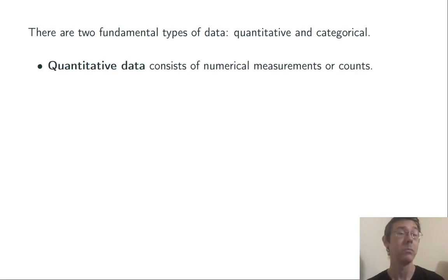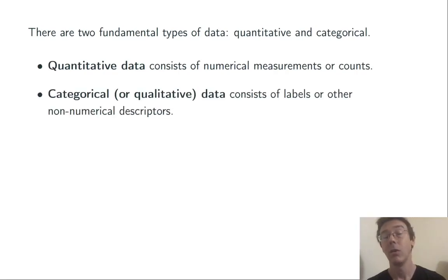Quantitative data consists of numerical measurements or counts, while categorical data, also known as qualitative data, consists of labels or other descriptors.